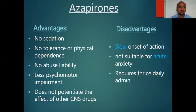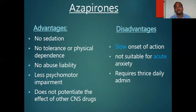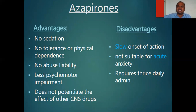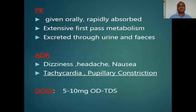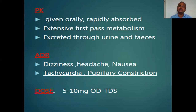Advantages of azapirones: no sedation, no tolerance, no physical dependence (unlike benzodiazepines and barbiturates), no abuse liability, and less psychomotor impairment. They do not potentiate the effects of other CNS drugs. Disadvantages: low onset of action — they act very slowly; not suitable for acute anxiety; require thrice-daily dosing. Pharmacokinetics: given orally, rapidly absorbed but slow action, extensive first-pass metabolism — most of the drug is metabolized in the liver before entering systemic circulation.